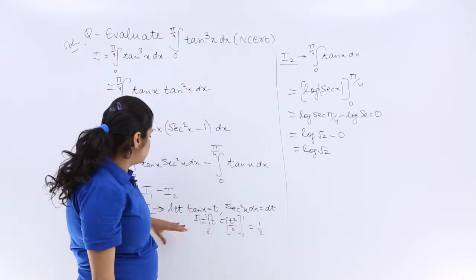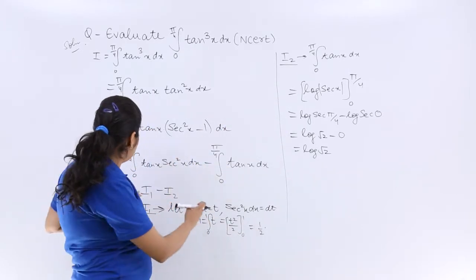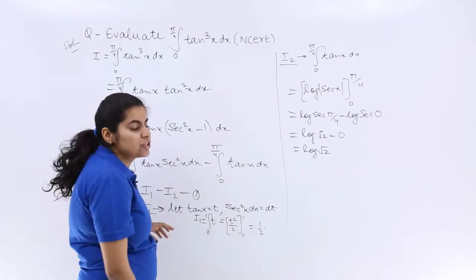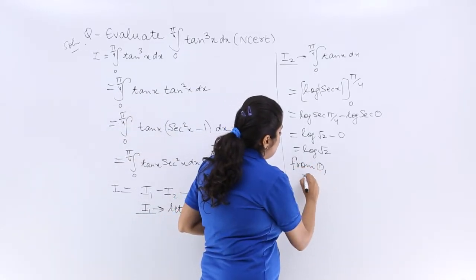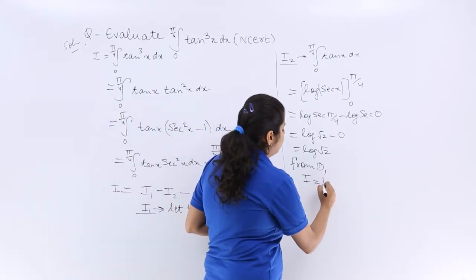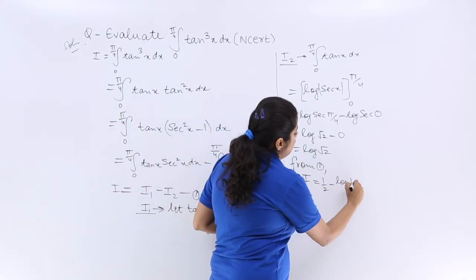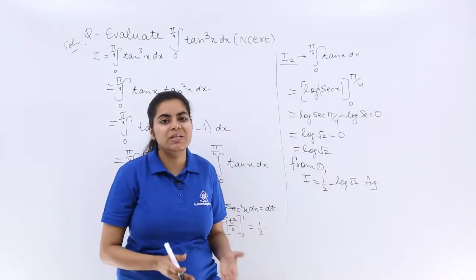So, I₁ evaluated, I₂ evaluated. Now what is my I? From equation 1, I = I₁ - I₂, that means 1/2 - log(√2), and that should be the answer to this question.